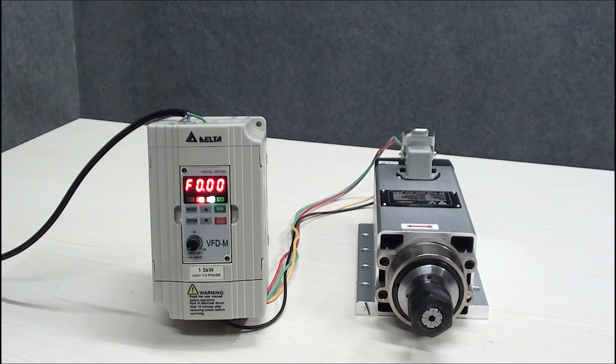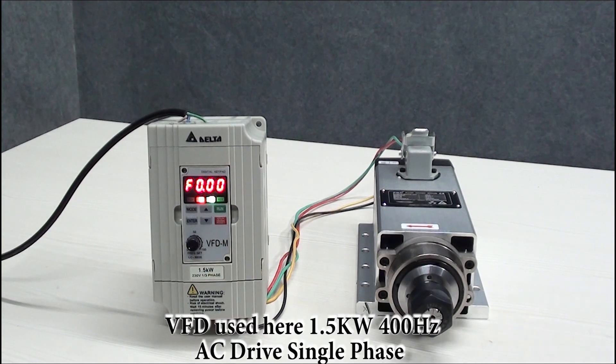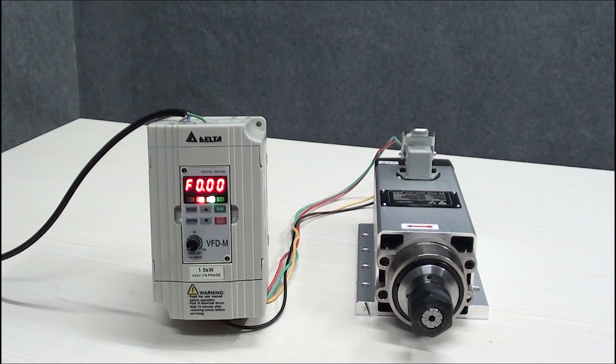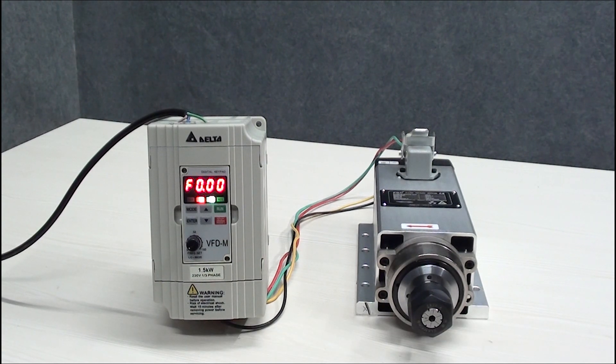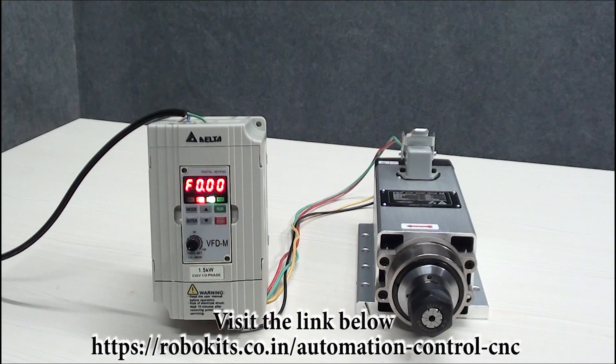Hello guys, today we will be talking about the primary settings of Delta VFD M series. It is a sensorless vector micro AC drive which is ideal for small and medium horsepower applications. We are going to show you how to configure this VFD with spindle motor setup of Delta VFD and spindle motor is compatible with CNC machine. You can check out various combos of VFD and different spindle motors on our website, the link given in the video.